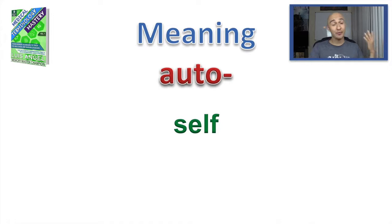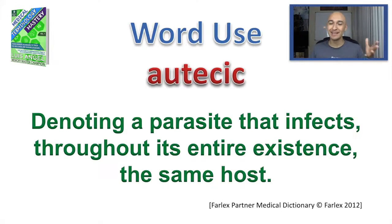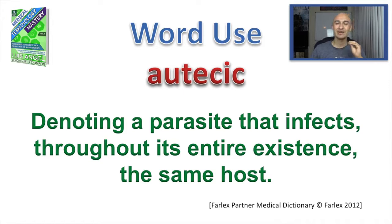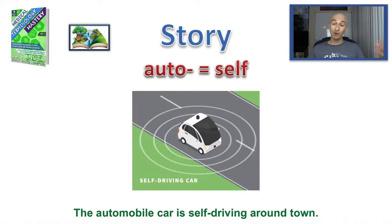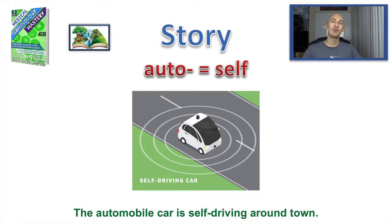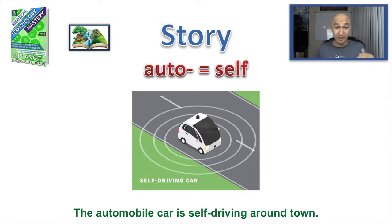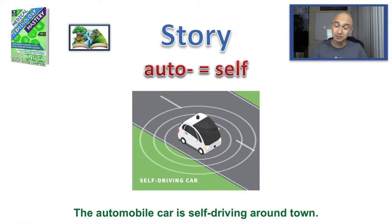Next one is auto. Auto means self. A word used for that is autistic, meaning a parasite that infects throughout its entire existence the same host. My story for auto, which means self, is: the automobile car is self-driving around town. Have you seen those Tesla cars? You can program it, put in the address, and it takes you where you need to go — self-driving. So that's auto: self.